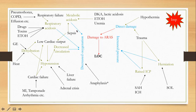Through both of those mechanisms — decreased oxygenation and low cardiac output — people lose consciousness. Severe gastroenteritis, heat loss, or anything causing fluid loss leads to dehydration, then hypotension, decreased cardiac output, decreased circulation, and decreased oxygenation. Liver failure, adrenal crisis, MI, and cardiac tamponade also cause cardiac failure. All of these mechanisms lead to hypotension and ultimately loss of consciousness.